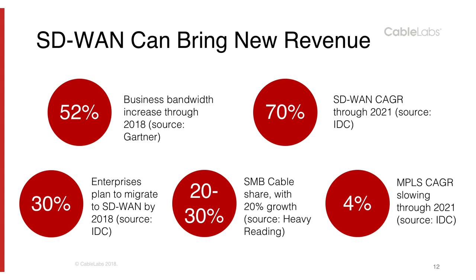Looking at the quantitative view: Gartner shows business bandwidth growing 52% cumulatively through 2018. SD-WAN growth through 2021 is 70% according to IDC. 30% of enterprises plan to migrate to SD-WAN by 2018 per IDC. SMB cable share is 20-30% with 20% growth according to Heavy Reading — great news for cable providers when combined with SD-WAN momentum. On the flip side, MPLS cumulative growth is slowing to 4% through 2021 — still positive, just slowing down.